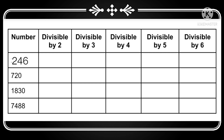Now let's take the second number, 720. It is an even number, so it is divisible by 2. Adding the digits — 7 plus 2 is 9, plus 0 is 9 — and 9 is divisible by 3, so 720 is also divisible by 3. For divisibility by 4, the last two digits are 20, and 20 is divisible by 4, so 720 is divisible by 4. The digit in the 1's place is 0, so it is divisible by 5. And since 720 is divisible by both 2 and 3, it is also divisible by 6.